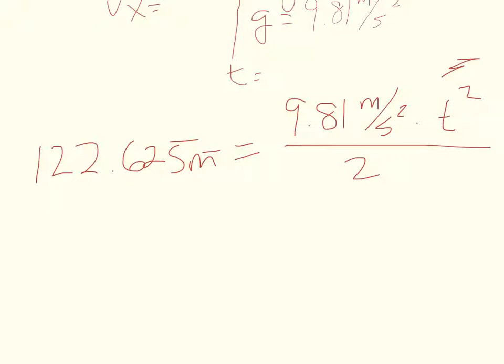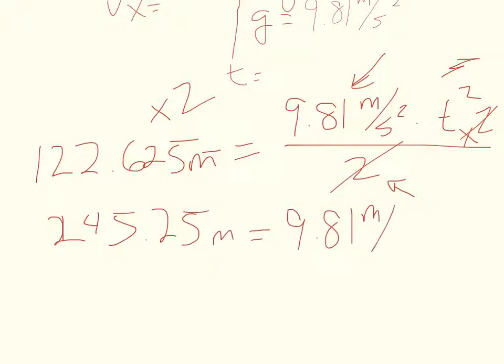To do that, we have to get rid of both this number and this number, but we want to get rid of this 2 first because both numbers are divided by 2. So I'm going to multiply both sides by 2. It will cancel over here, and I end up with 245.25 meters = 9.81 m/s² × t².